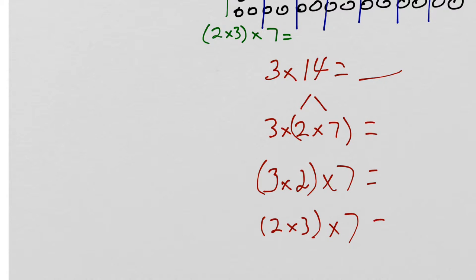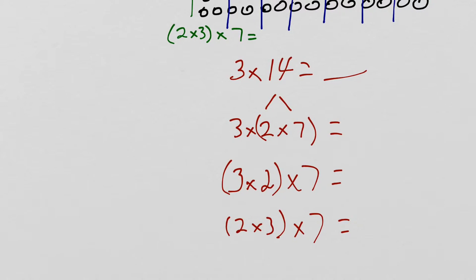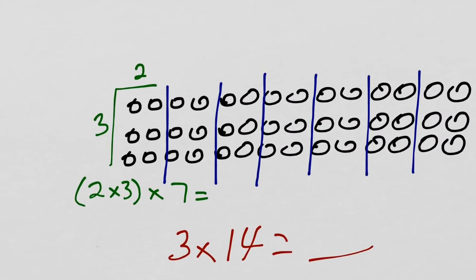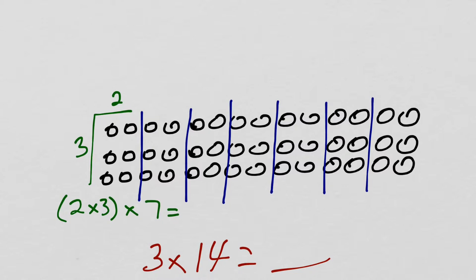These are all going to equal the same thing. Let's take a look back at the array. I have these 7 mini arrays of 2 times 3. Well, 2 times 3 is 6. It's easy to see that there's 6 in each of these little mini arrays. So, it's really 6 times 7. If I count by 7s, 6 times 7, 14, 21, 28, 35, 42. So, 6 times 7 equals 42. And if I count, I'll see that there are 42 there. And 3 times 14 is 42.